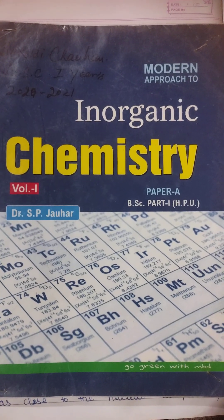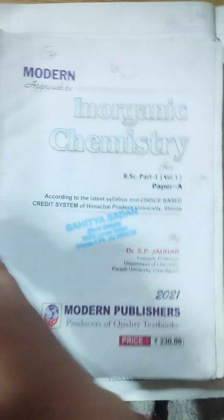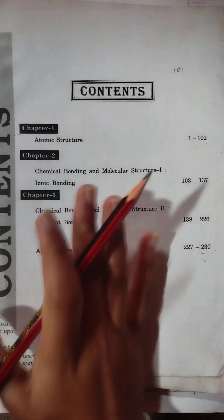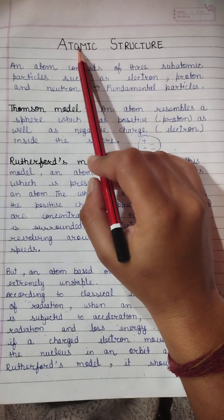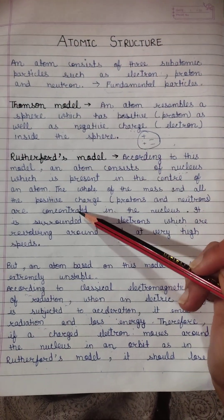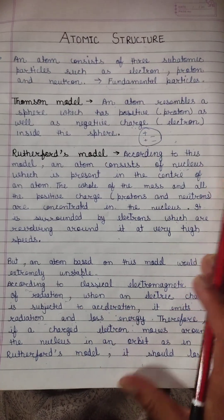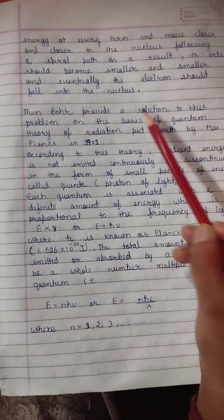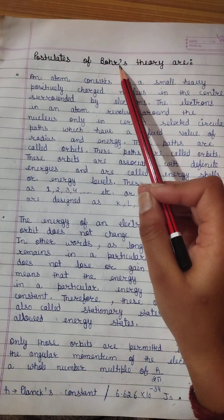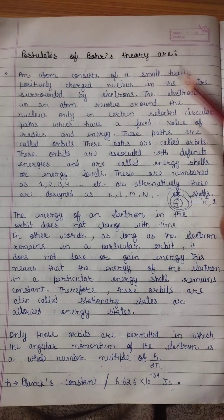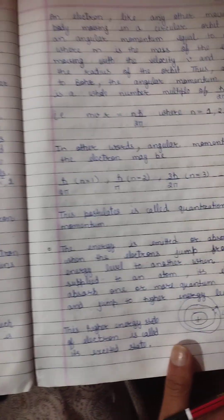Hi, good morning, good afternoon, and good evening. We are in inorganic chemistry paper, BSc first year, first chapter: atomic structure. In the first video we covered the Thomson model and Rutherford model. We saw the drawbacks — why it is not stable according to classical electromagnetic theory of radiation. A solution was provided and discussed in the second video, where we covered Bohr's postulates and why the atom is stable.